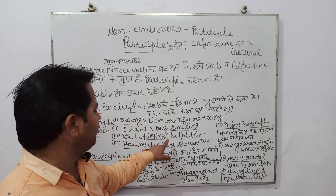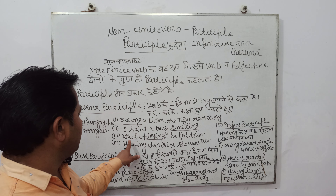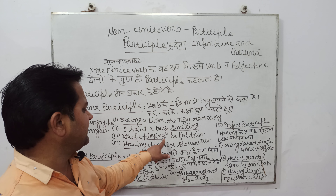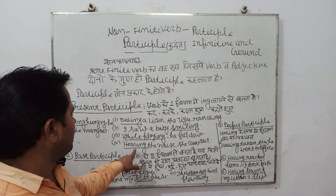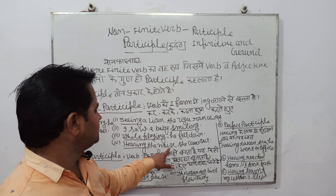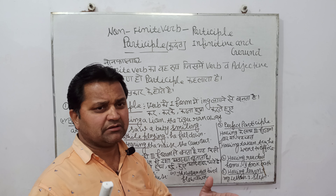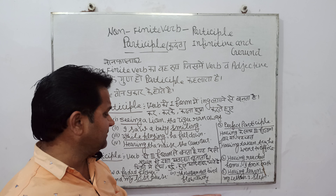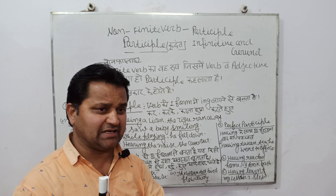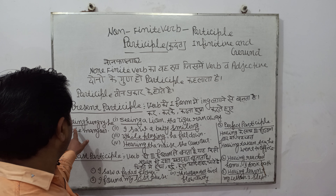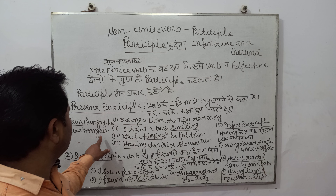While playing, he fell down. Khelte khelte, woh gir gaya. While playing is present participle here. Hearing the noise, she came out. Shor sunkar woh bahar aayi. Is sentence mein 'hearing' jo hai, wo present participle hai.